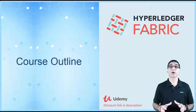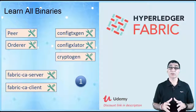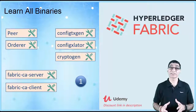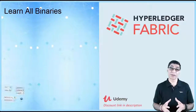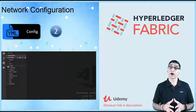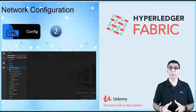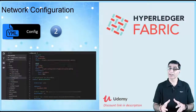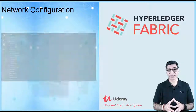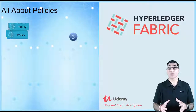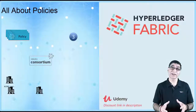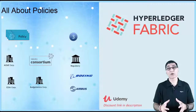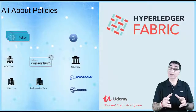Here is how the course is organized. First, you will learn about all of the fabric's core tools and binaries that are essential for setting up the Hyperledger Fabric infrastructure. Next, you will learn how to set up a fabric blockchain network by putting together the configuration file in YAML format that is needed by most binaries. Next, you will learn all about policies that are needed for enforcing the rules for a consortium-driven blockchain network.